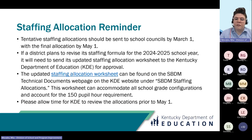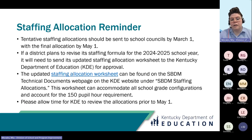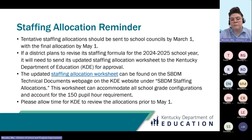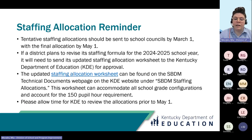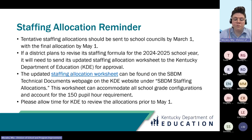As a reminder, tentative staffing allocation should be sent to the school councils by March 1st, with final allocation by May 1st. If you plan on revising the staffing allocation, please send the updated worksheet to us for approval. You can find the updated staffing allocation worksheet for the 24-25 school year under the SBDM staffing allocation heading on the SBDM technical documents webpage. Please allow some time for KDE to review those allocations prior to May 1st.